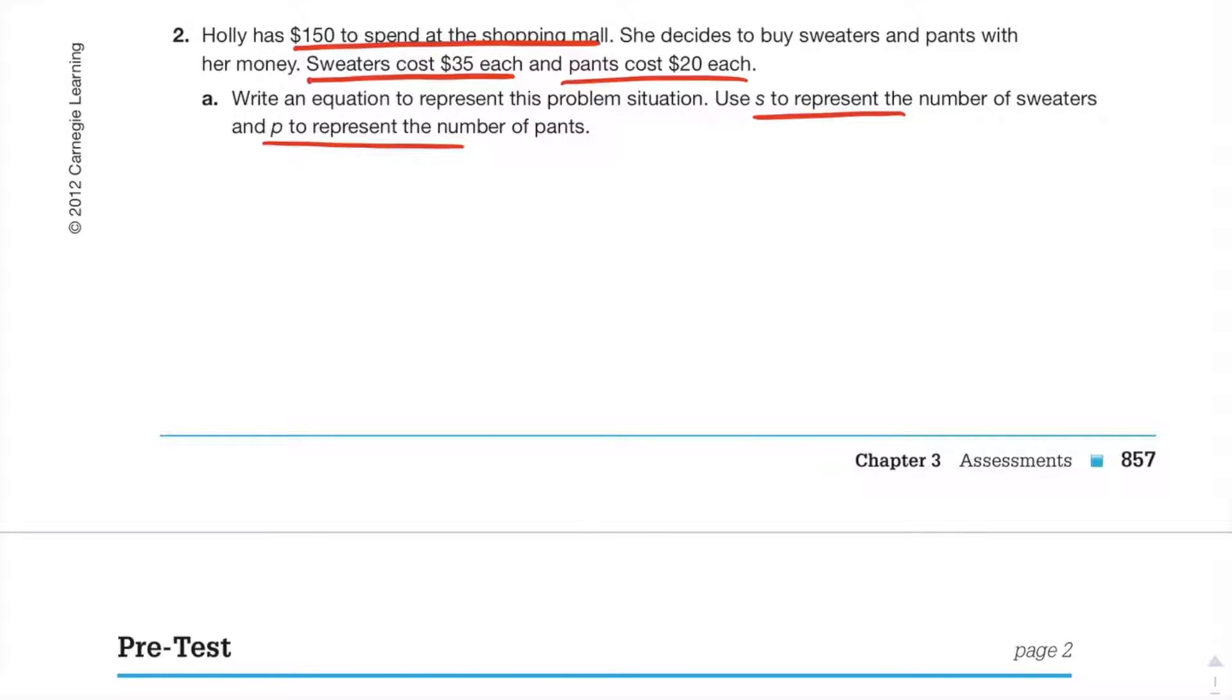Okay, so we know Holly has a hundred and fifty bucks to spend and we have, what are the two numbers? Thirty-five and twenty. You're probably going to add them. S represents the number of sweaters at thirty-five, and p represents pants.